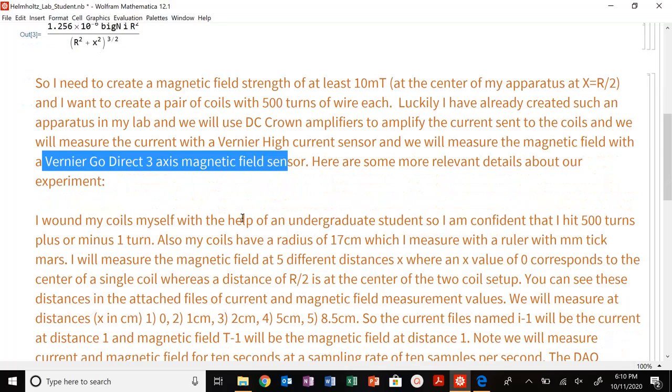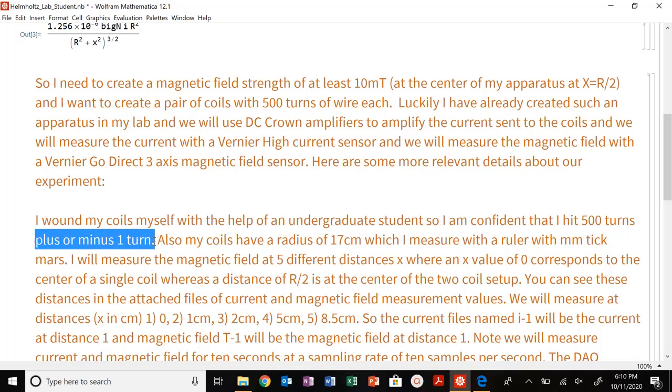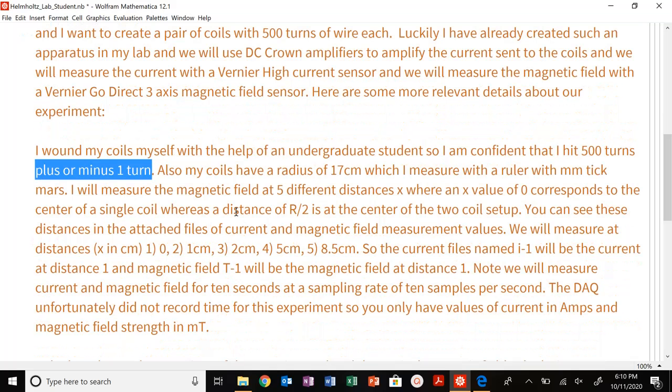So I wound the coils myself with the help of an undergraduate student, confident I hit 500 turns, plus or minus one turn. So I've only measured this once. So that's a key thing. So my uncertainty is plus or minus one. Also coils, a radius of 17 centimeters. Measure with a ruler with millimeter tick marks.